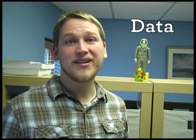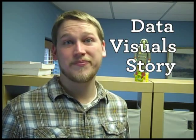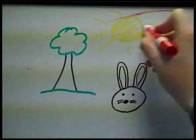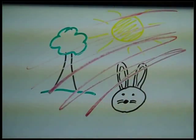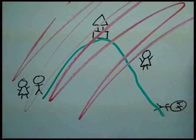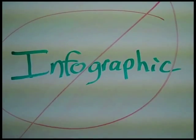Strip it down to what it really means. So what is an infographic? It's just data presented visually that tells a story, and that's it. That's pretty basic, but there's a few things to remember. If you don't have data, or you don't have visuals, or you don't have a story, then guess what? You don't have an infographic. You just have a mess.